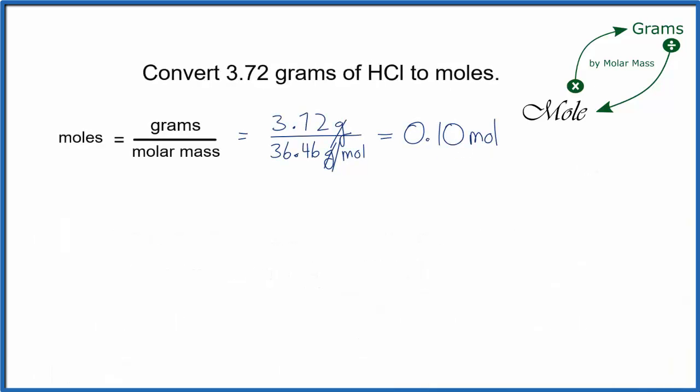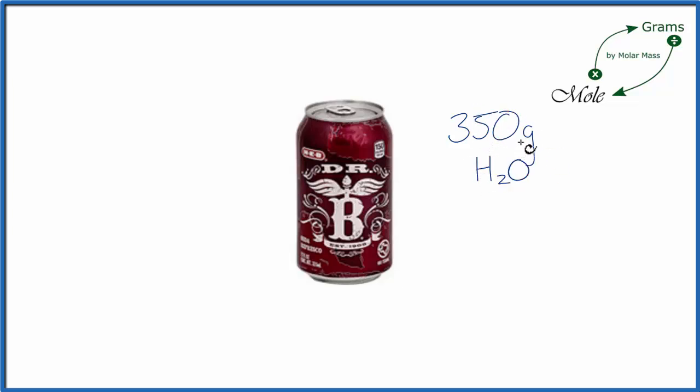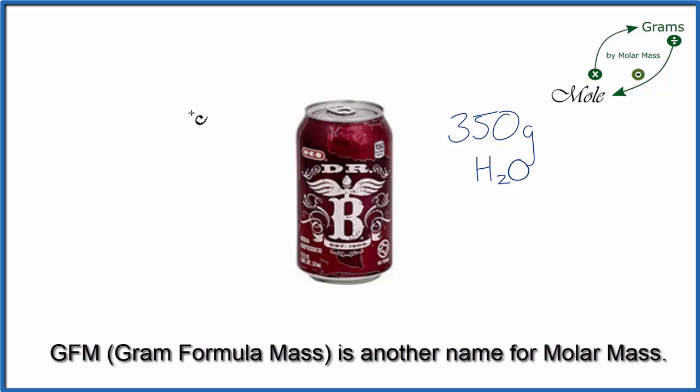Let's look at one last way to convert from moles to grams, building upon what we've learned, and we'll do these conversions the way scientists do. So a can of Dr. B's soda weighs about 400 grams, and of that, 350 grams are water. We could convert this 350 grams to moles by dividing by the GFM of water. That would give us about 19 moles of water.